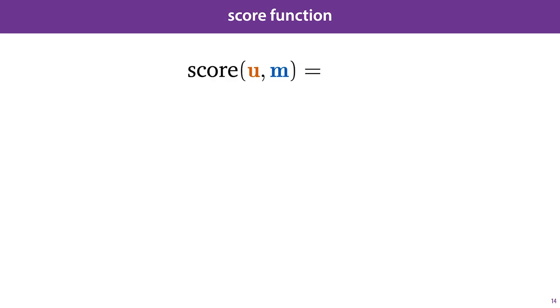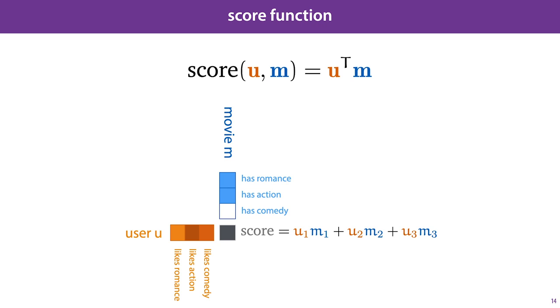Based on these representations, we then need to come up with a score function, some function that takes the two representations and outputs a highly positive number if the user is well-matched to the movie, a large negative number if the user will probably dislike the movie, and a number near zero if the user will be ambivalent about the movie. There are a few options, but a particularly simple one is the dot product between the user embedding and the movie embedding. This neatly expresses how much of a match the two are. If the user loves romance and the movie contains loads of it, then the romance term in the sum becomes very big.